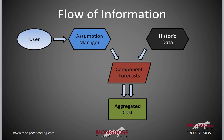Here's the flow of information for the workbook. Our historic data are the black tabs. They feed into the red sheets — the component forecasts — which then combine into the single green sheet that is the aggregated cost.